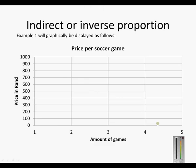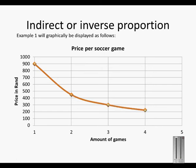Example 1 will graphically be displayed as follows. One game is equal to 900 Rand. Two games is 450 Rand. Three games was 300 Rand each. Four games was 225 each. So do you see that it decreased to less than 200 Rand for five games? Now this is the graph of an inverse or indirect proportion.